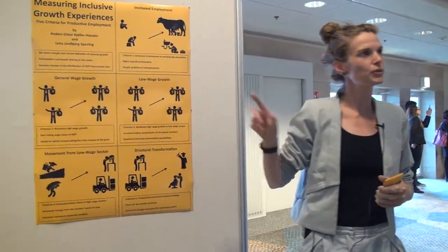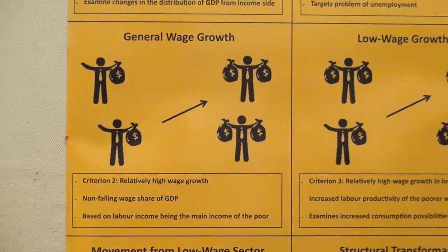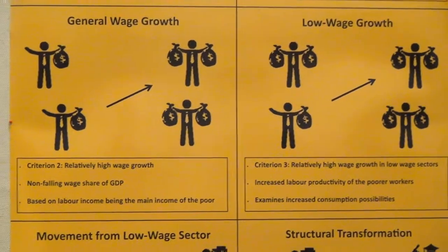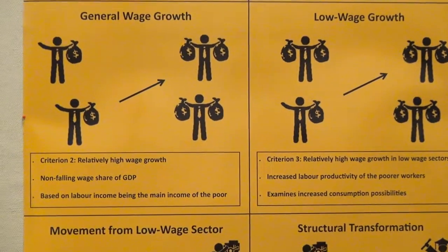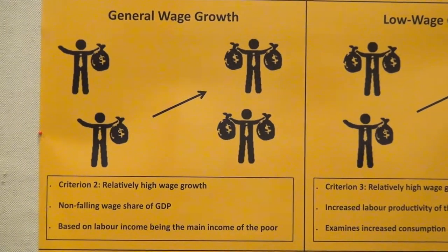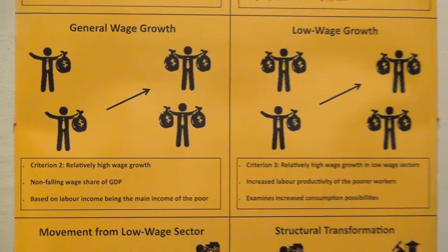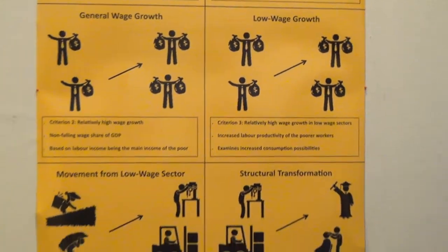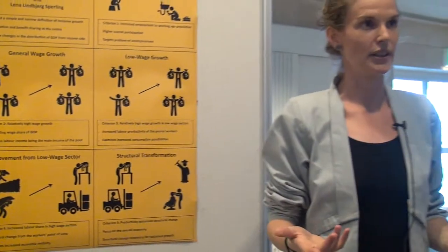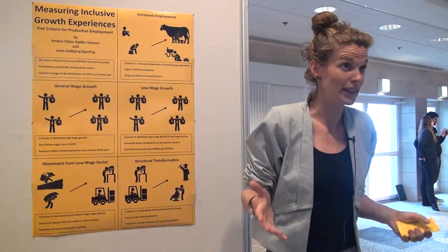So we need the next three criteria to assess the quality of employment. The second criterion looks at the general wage growth in the country, saying there should not be a falling share of GDP accruing to workers. This is quite intuitive: the main income source of most people, especially the poor, is labor income — so we want this not to be a decreasing share of GDP.